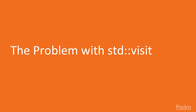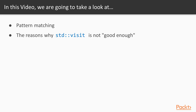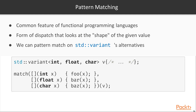The problem with std::visit. We're going to take a look at pattern matching and the reasons why std::visit is not good enough. Pattern matching is a common feature of functional programming languages — it's a form of dispatch that looks at the shape of a given value and allows you to destructure its shape and perform an action depending on it.